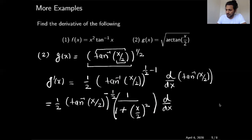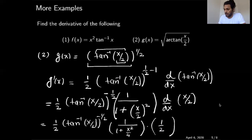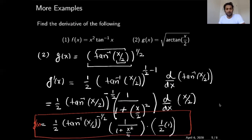Times the derivative of the inside function x over 2, which is one-half. So the final simplified form is: one-half times tangent inverse of x over 2, raised to the negative one-half, times 1 over 1 plus x squared over 4, times one-half. I will box the answer here. This is g prime of x; you can simplify further if you want.